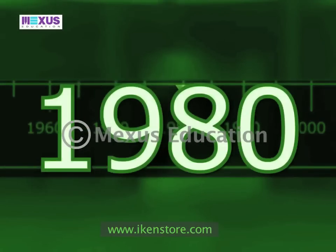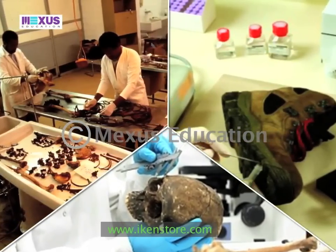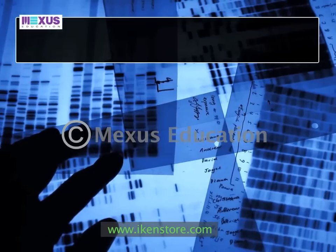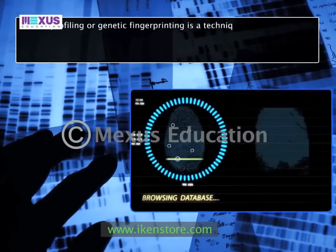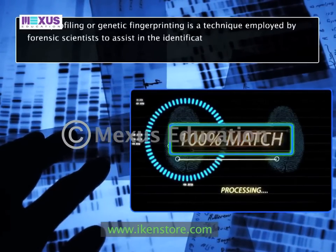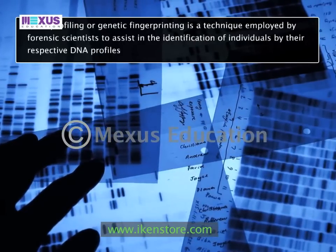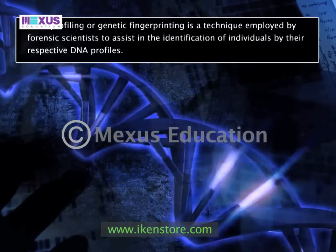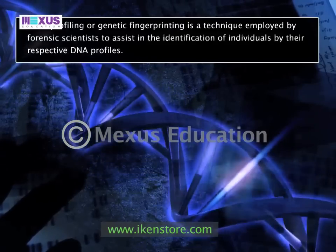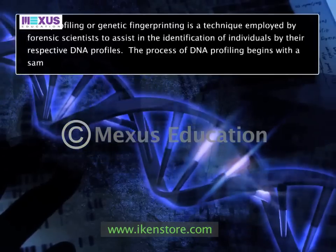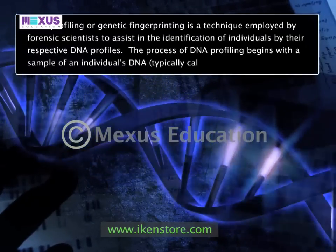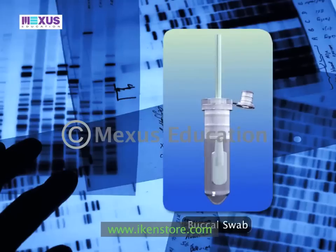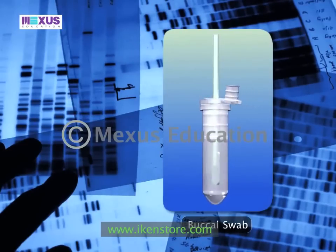The mid-1980s saw one of the most significant milestones of all time in the field of forensic science: the development of DNA profiling. DNA profiling, or genetic fingerprinting, is a technique employed by forensic scientists to assist in the identification of individuals by their respective DNA profiles. DNA profiles are encrypted sets of numbers that reflect a person's DNA makeup, and the process begins with a reference sample, most desirably collected via a buccal swab to reduce the possibility of contamination.